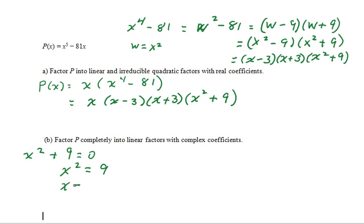which means x is equal to plus or minus the square root of 9 times the square root of negative 1, which is equal to plus or minus 3i.